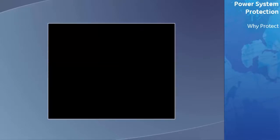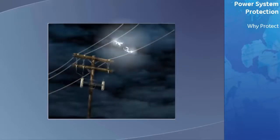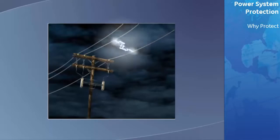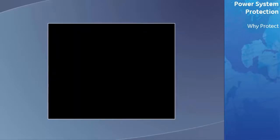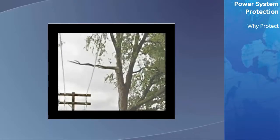Lightning striking the transmission line, or a strong wind causing two phases of the transmission line to touch and form an arc, are common causes of an intermittent fault to an overhead transmission line. The resulting arc ionizes the air and turns it into a conductor, and the arc is then maintained by the power in the line. In both cases, the protection system responds by removing power from the line for a period of time long enough to allow the ionized air to dissipate, and then reapplies power to restore service.